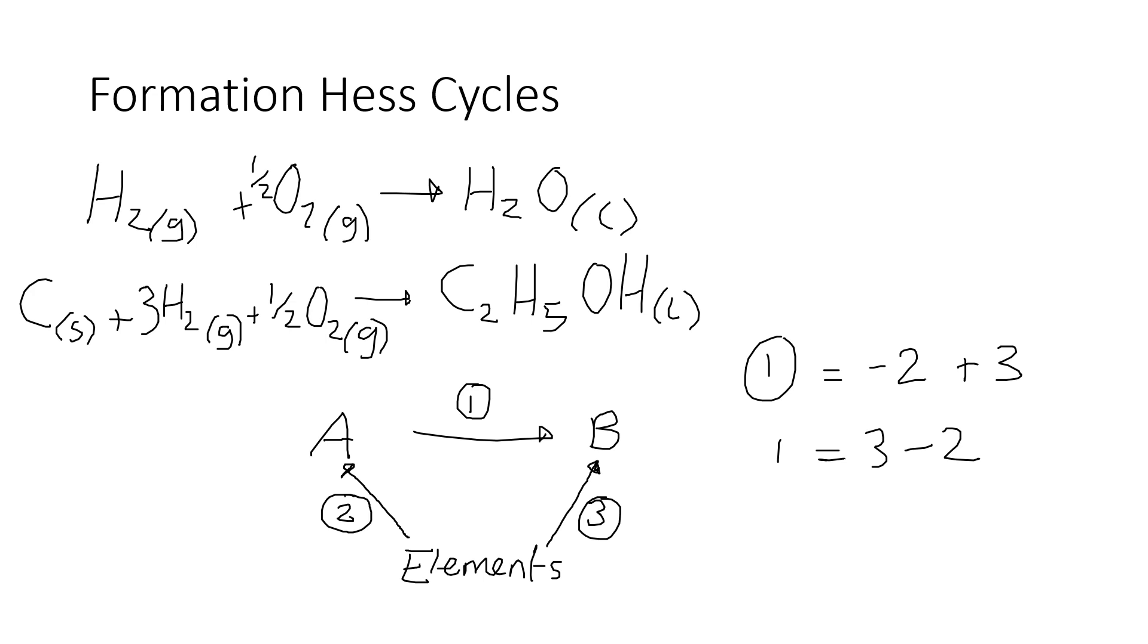Another way of saying this is delta H for the reaction that you're trying to work out, if you're going with arrow one, equals products minus reactants. So you work out the enthalpy of formation of the products, and then you subtract away the reactants.